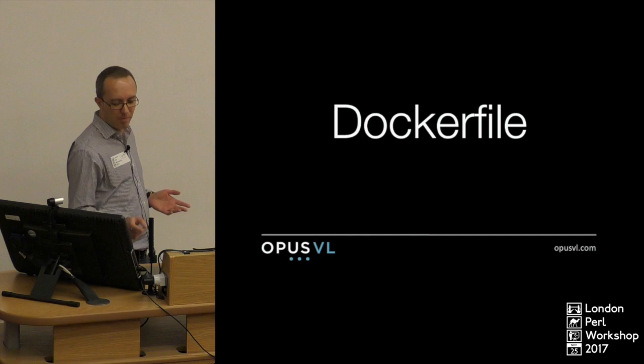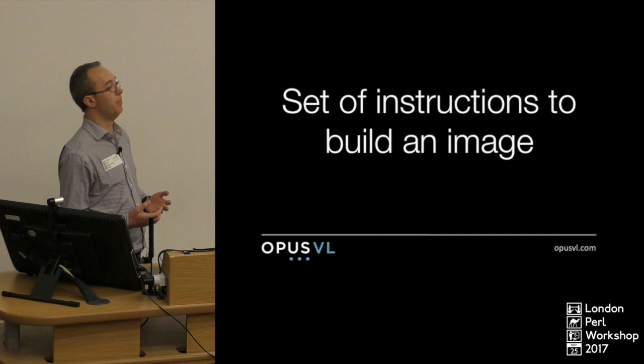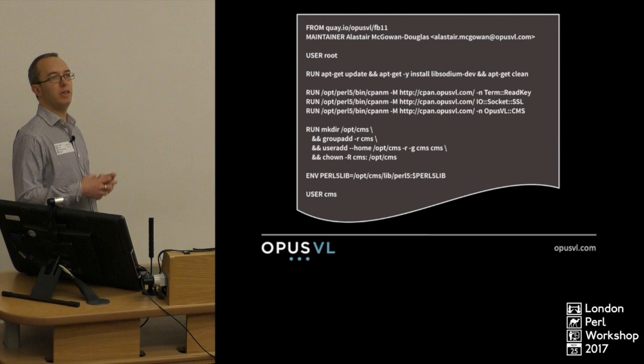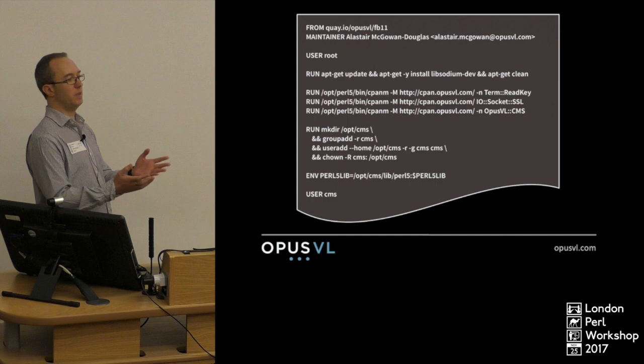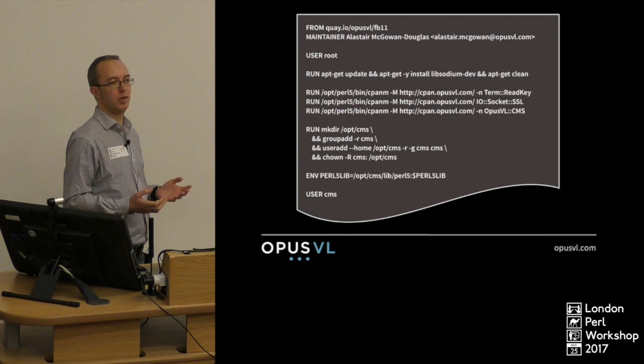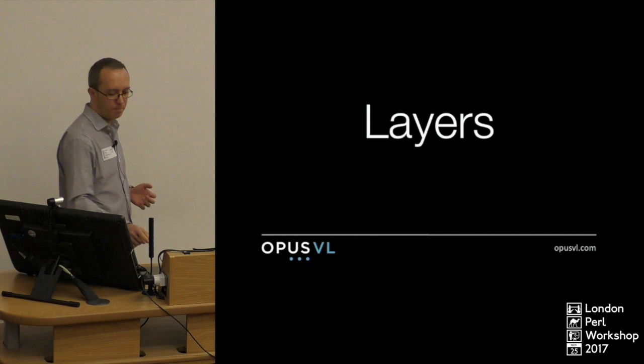Let's start with some concepts. You'll come across a Dockerfile. A Dockerfile is the set of instructions to build an image. It's essentially the instructions you'd give somebody starting from an operating system to install your app — that's what you put in your Dockerfile. You can include any shell commands. For a Perl example, you'd use CPANM to install modules, create users, and that sort of thing.